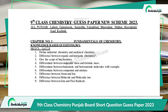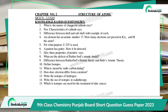That completes Chapter 1: Fundamentals of Chemistry important short questions. Now let us move to Chapter 2, which is the Structure of Atoms. The important short questions are: What is the nature of the charge on cathode rays? Give characteristics of cathode rays. Difference between shell and sub-shell with an example of each. An element has atomic number 17 — how many electrons are present in K, L, and M shells of the atom?